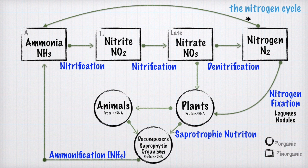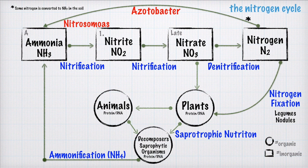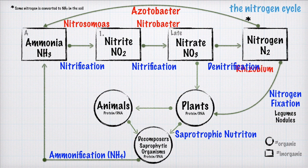Not all of the nitrate ends up in the atmosphere — some bacteria hold it back and take it back to ammonia. That's all happening in the soil. The Azotobacter is the bacteria that holds some of those nitrates back in the soil to convert them back to ammonia. Another rock star is Nitrosomonas, which specifically converts ammonia to nitrite NO2. Then we have Nitrobacter, which is specific to nitrite to nitrate. And the one left for last — found in legumes in the nodules — is Rhizobium.